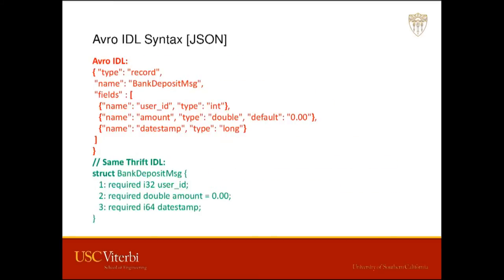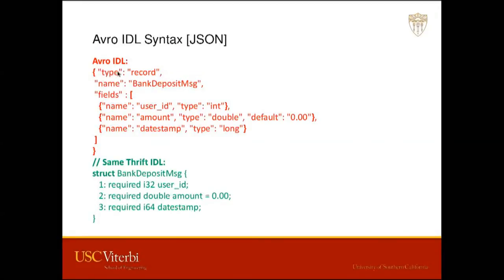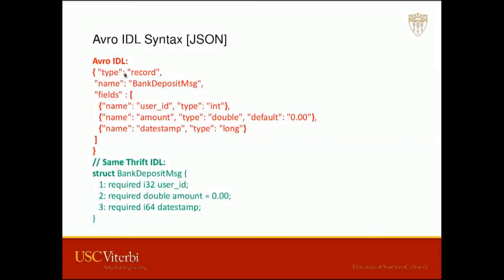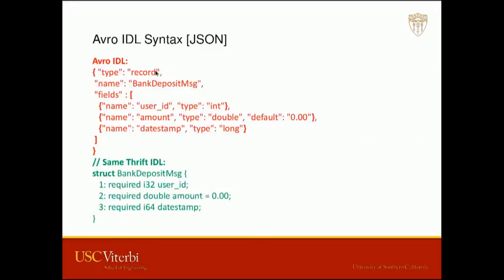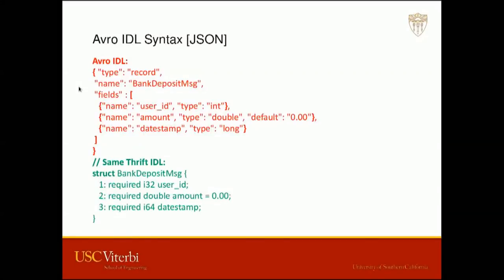The Avro IDL syntax is implemented in JSON, so I want to describe JSON for anyone unfamiliar. It stands for JavaScript Object Notation — it's a subset of the syntax used to define object literals in JavaScript. It's essentially a list of key-value pairs where the keys are always strings. The values can be strings, numbers (no quotes needed), nested objects, or arrays. It's pretty simple, and it turns out it's used as the syntax for the Avro IDL.